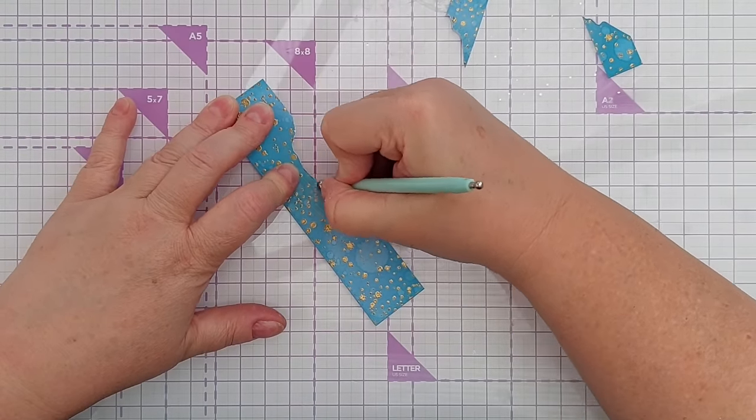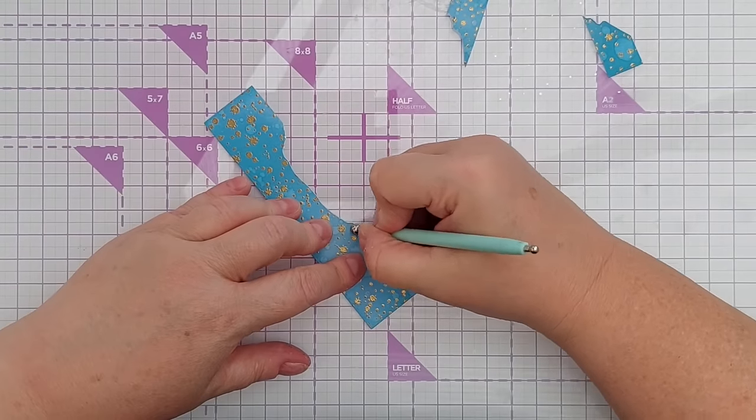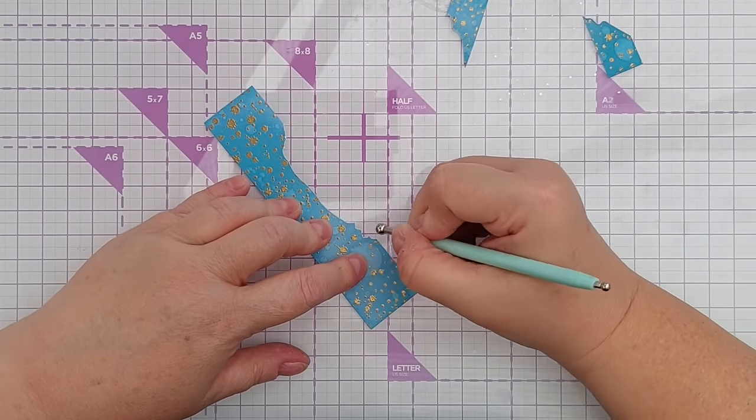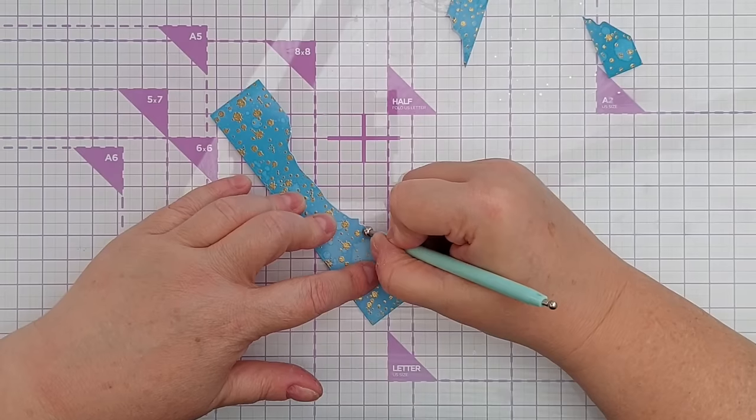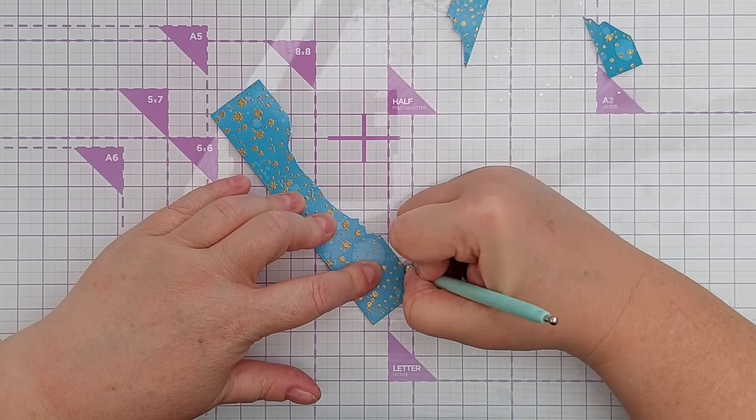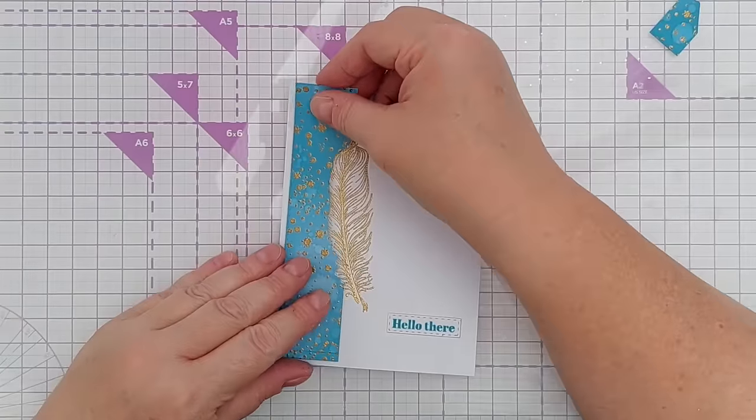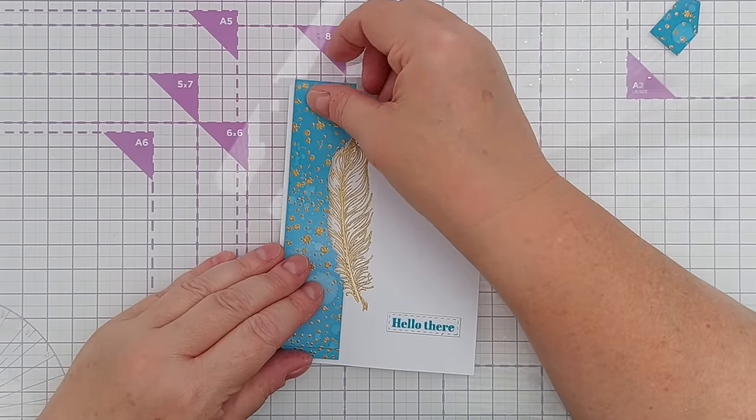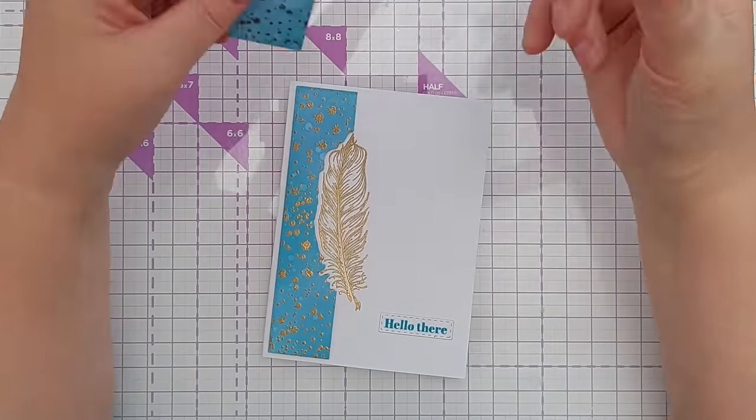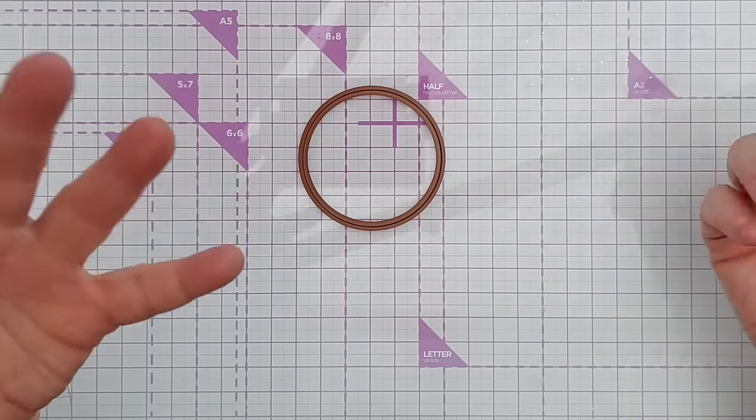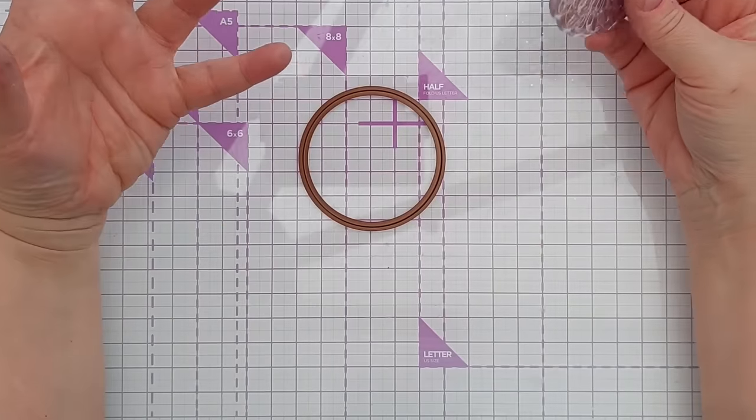And then take an embossing tool and run it down the cut edge—excuse the banging, the neighbors are doing some more DIY, but we're nearly finished. That will bevel the edge along where you cut it, and then that can sit on top like that. So you can do this without a die.